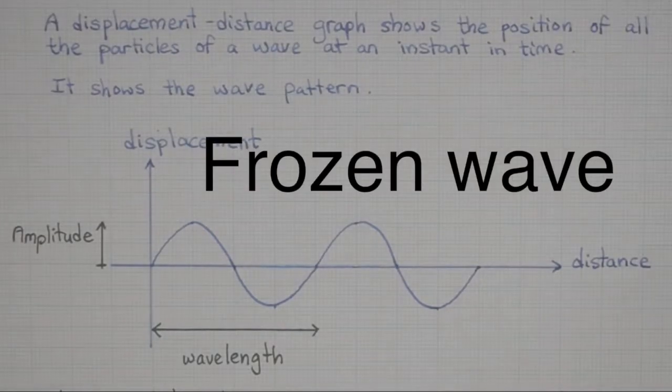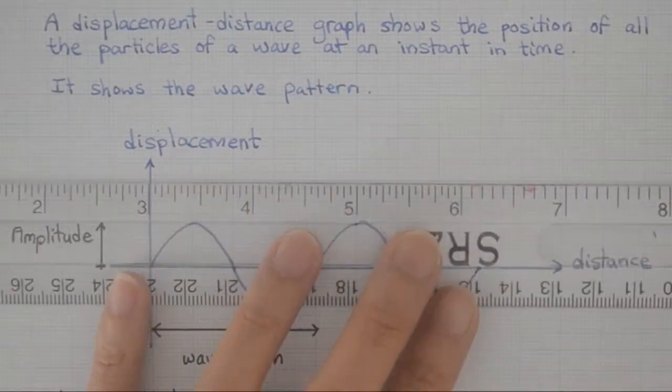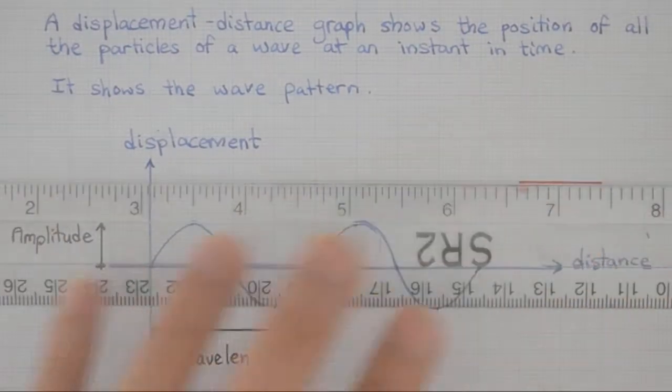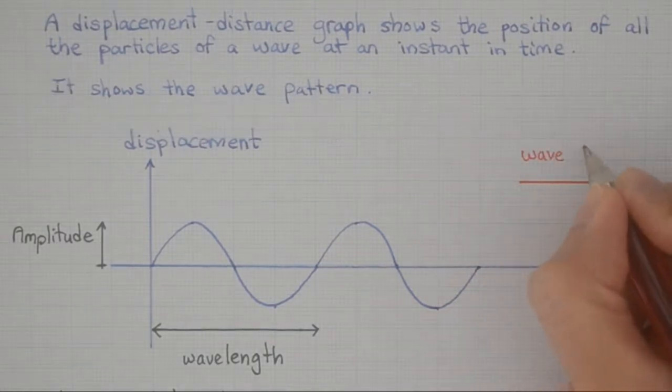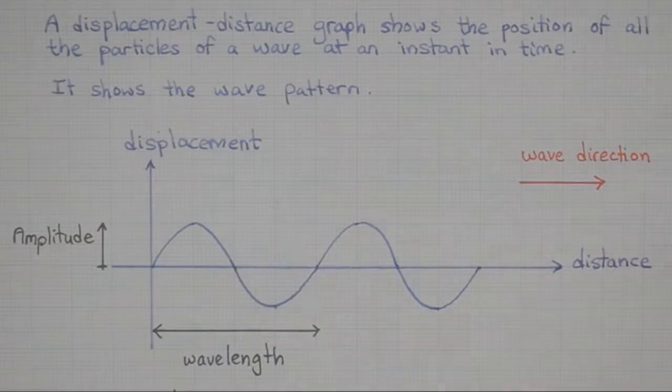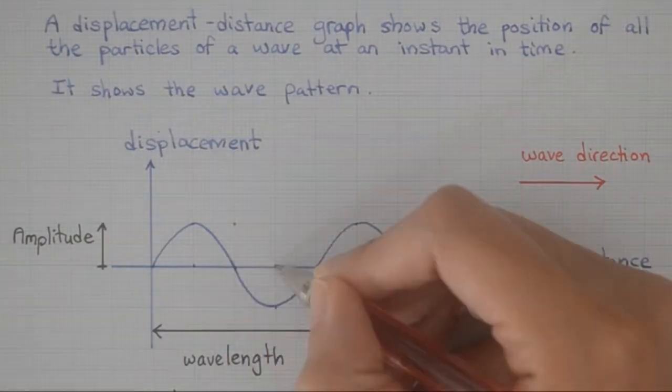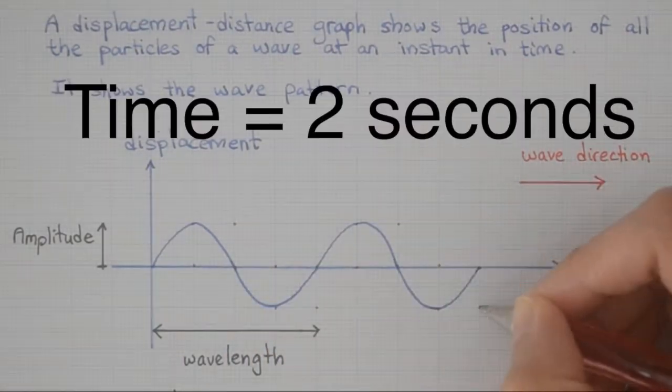Now we have a wave frozen in time, but we know that if we unfreeze time, the wave will propagate to the right immediately. I'm going to draw a dotted line in red to show where the wave might be in the next moment in time, let's say after 2 seconds.